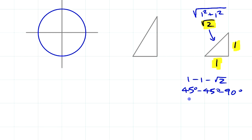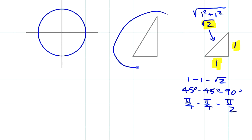Sometimes people call it a pi over 4, pi over 4, pi over 2 triangle in radians. The connection that needs to be made is between the angles and the ratio of the sides. The other special triangle comes not from half a square, but from half of an equilateral triangle.